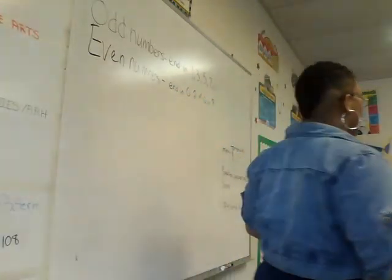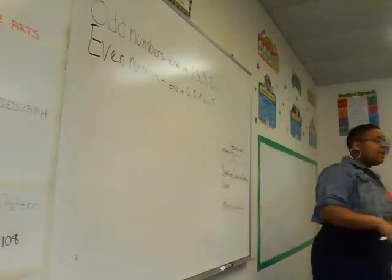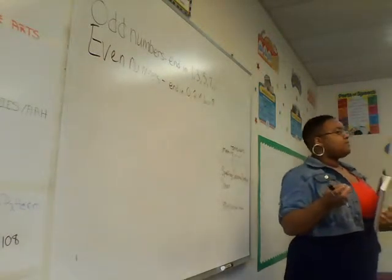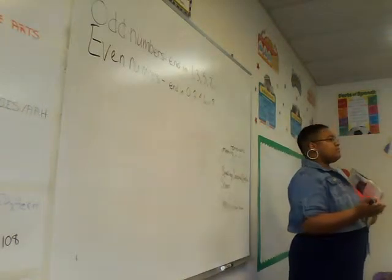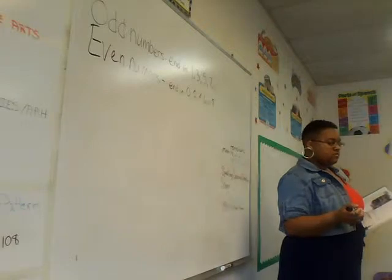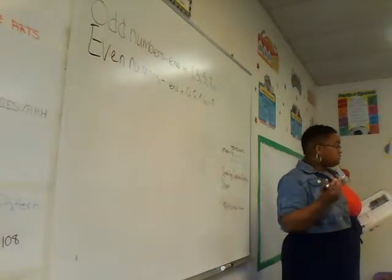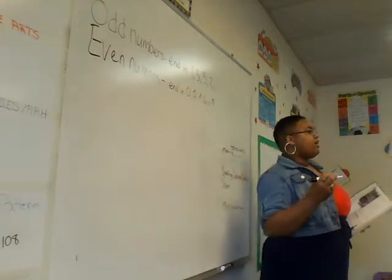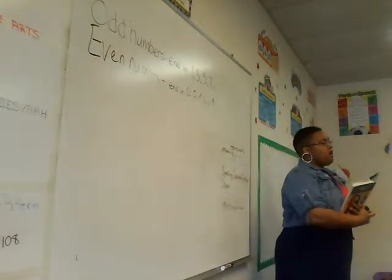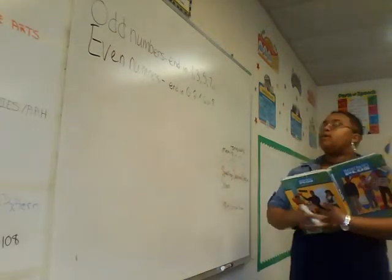Today's math lesson we're going to cover odd and even numbers. Does anyone have an idea of what an odd number is? Timothy? The odd number is 1, 3, 5, 7 and there's one that's missing from odd numbers. Odd numbers end in 1, 3, 5, 7 or what?